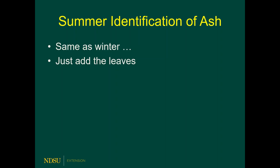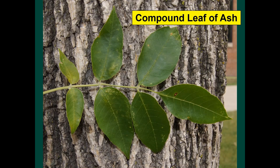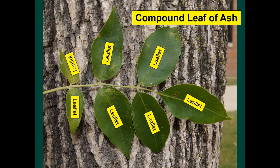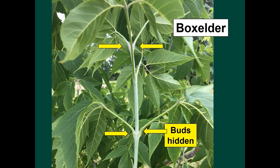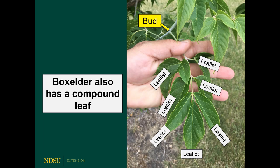All of the characteristics discussed so far — branch arrangement, bark, seeds, and twigs — can be seen in both winter and summer. The only thing that can be seen in summer but not winter are the leaves. Ash trees have compound leaves. Compound leaves contain multiple leaflets, but how can you tell these are leaflets and not just small leaves? Look for the buds — buds are found along the twig and define where a leaf begins. Some species have simple leaves, while others have compound leaves. Box elder also has compound leaves; during the growing season the buds are hidden a little bit, so you'll have to look closely to find them.